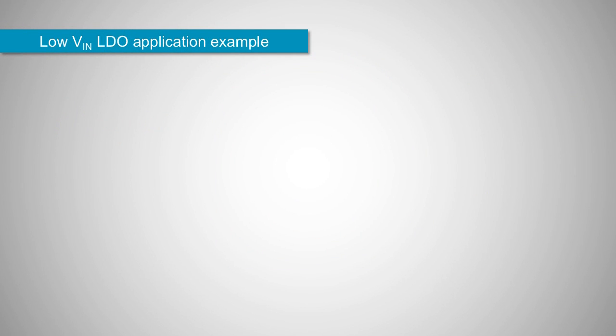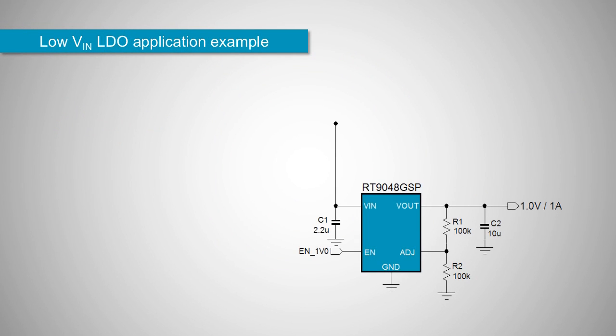Here is an example of the RT9048, a 2 amp N-MOSFET LDO with an internal charge pump, which is used to power a 1 volt core rail with 1 amp.